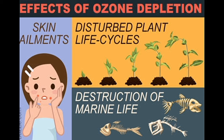Impact on plants: In some species of plants, UV radiation can alter the time of flowering as well as the number of flowers produced by a plant. Plant growth can be directly affected by UVB radiation. Despite mechanisms to reduce or repair these effects, physiological and developmental processes of plants are affected.